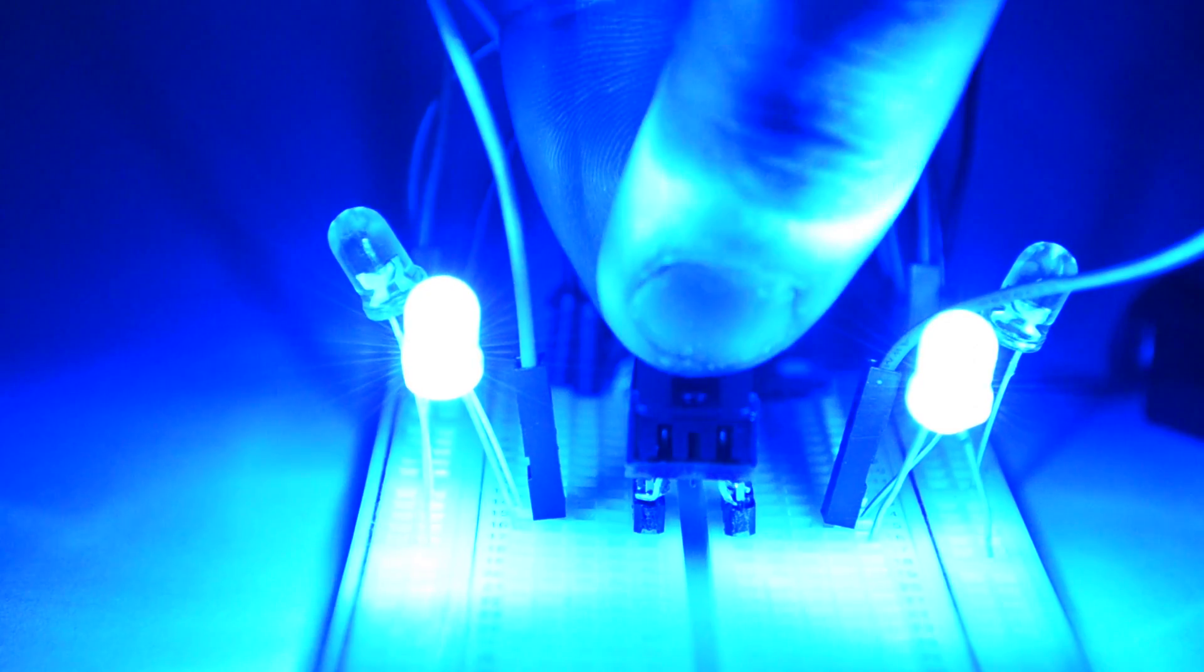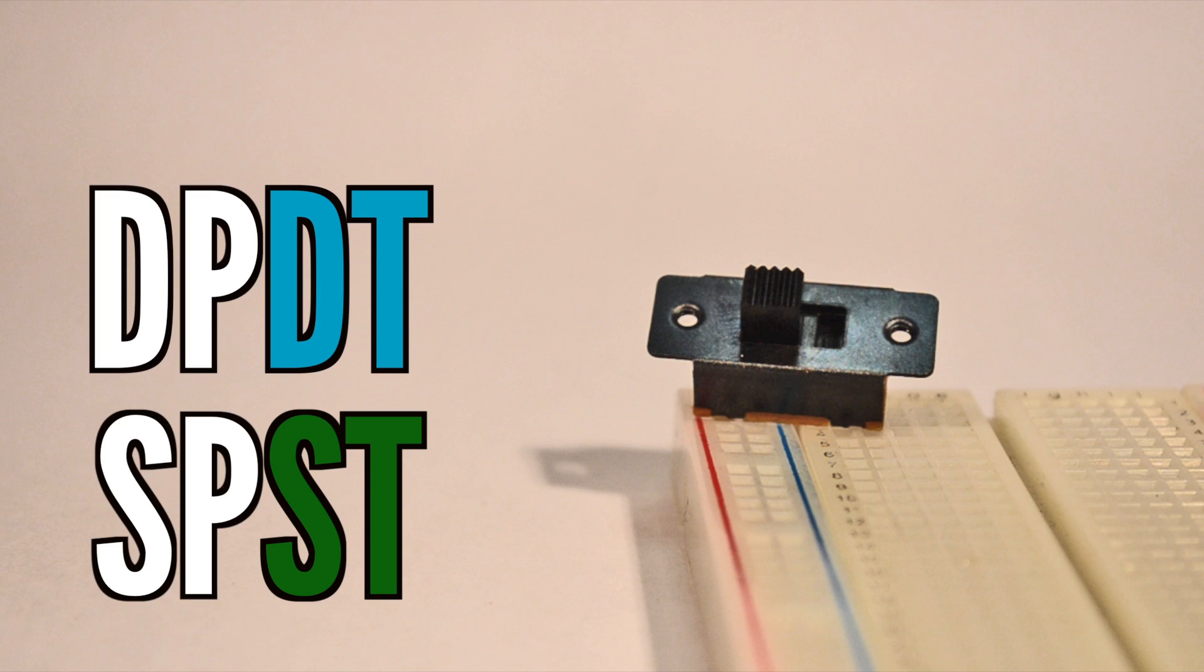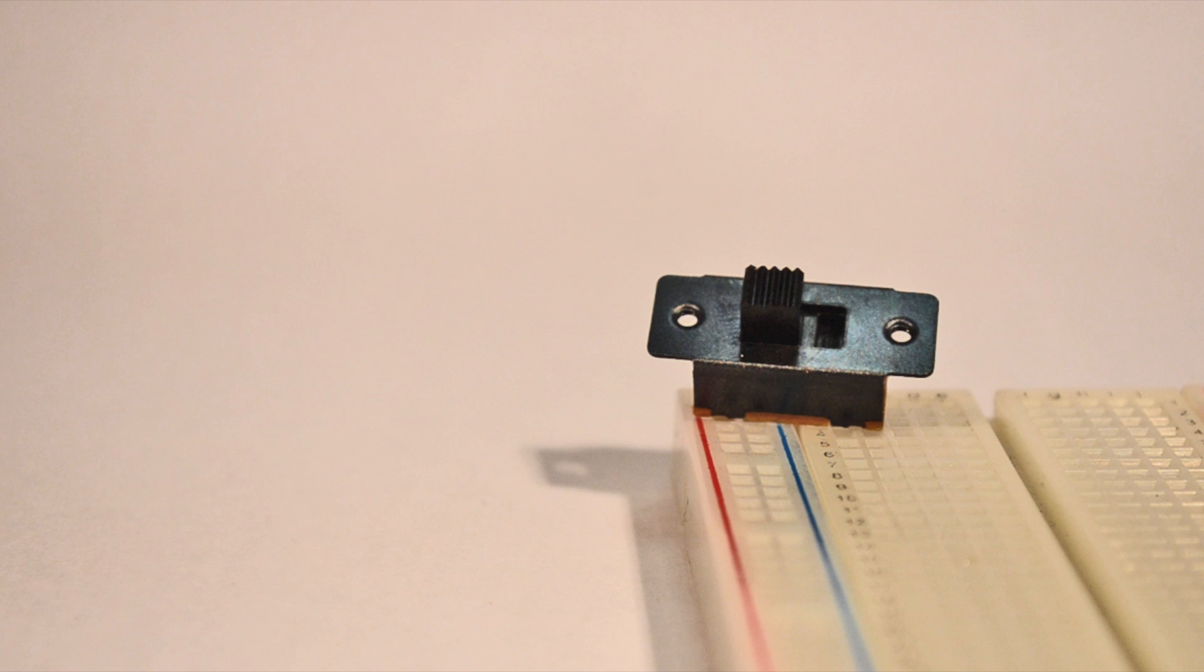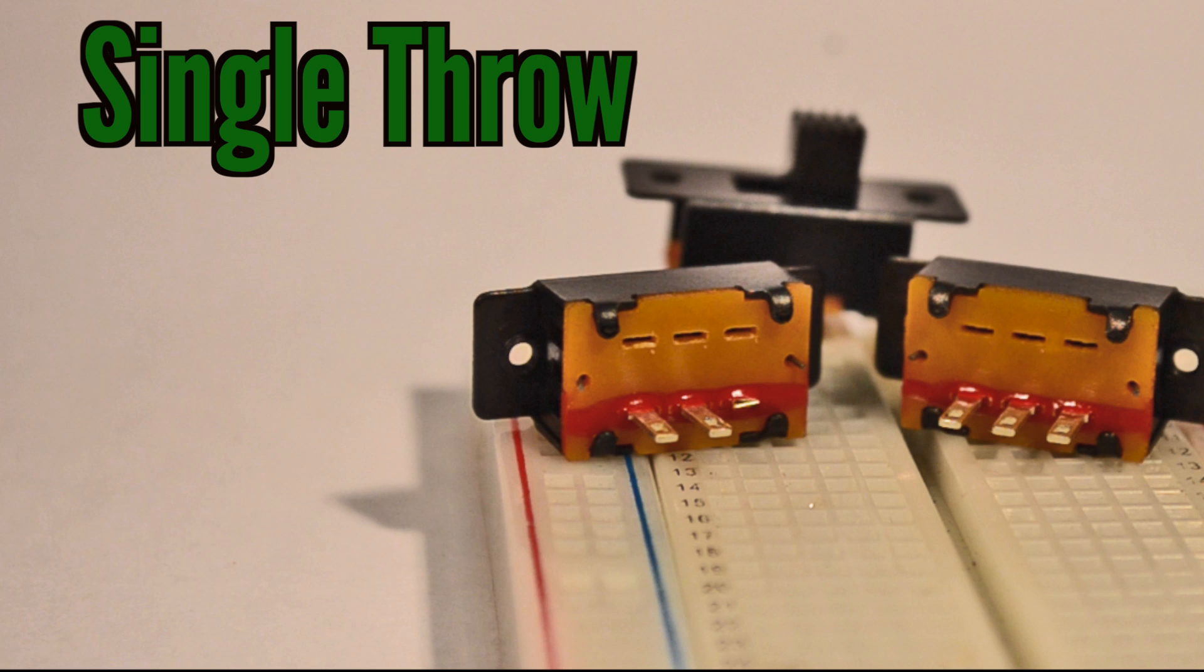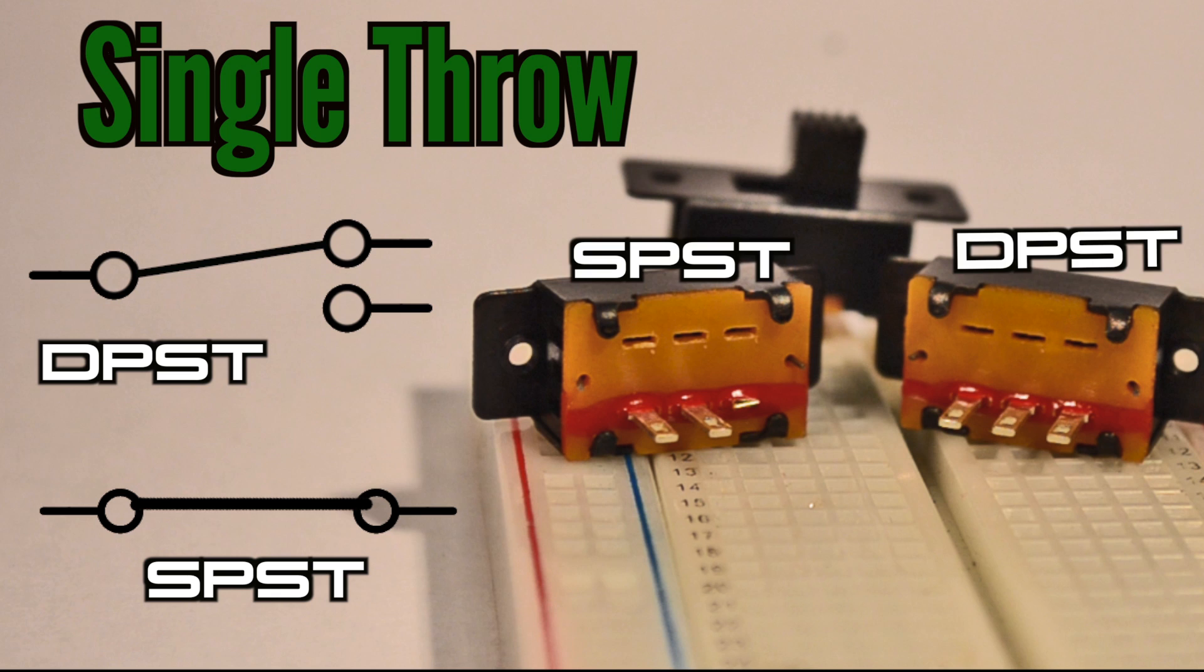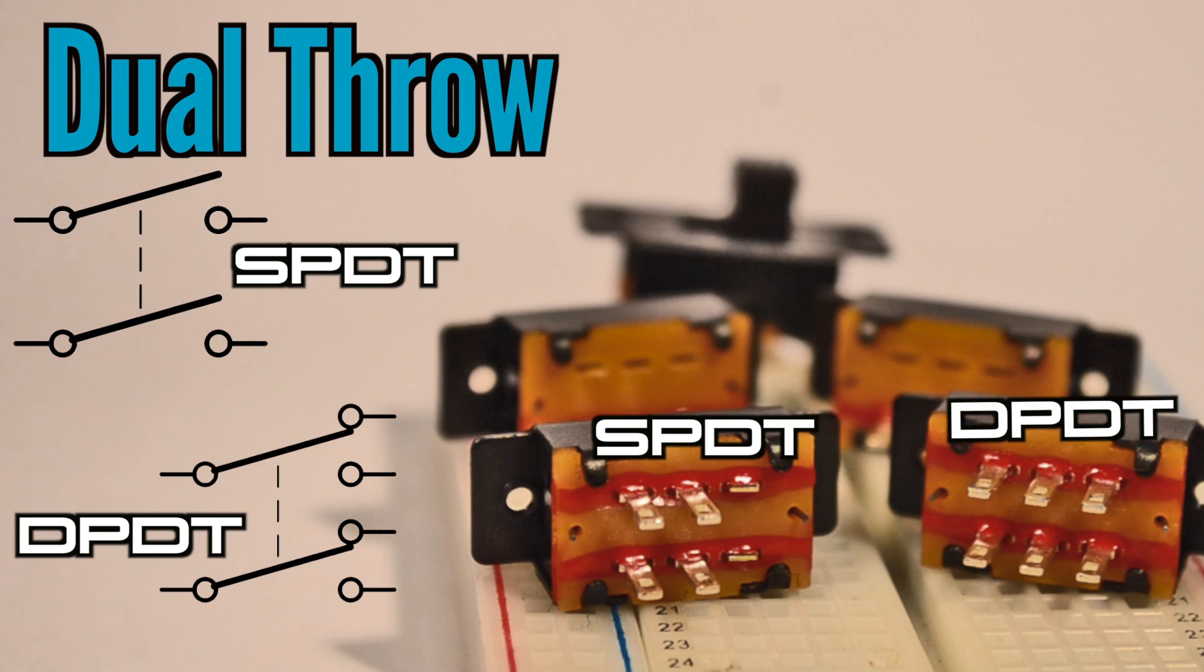As for ST and DT, this simply refers to the number of channels or paths that are affected by manipulating the switch. ST stands for single throw and has one row of pins across which the switching occurs. DT, as you might guess, stands for dual throw and has two separate rows of pins, both affected by the switch simultaneously.